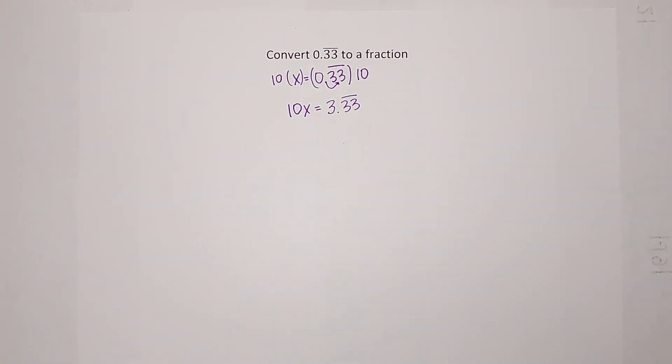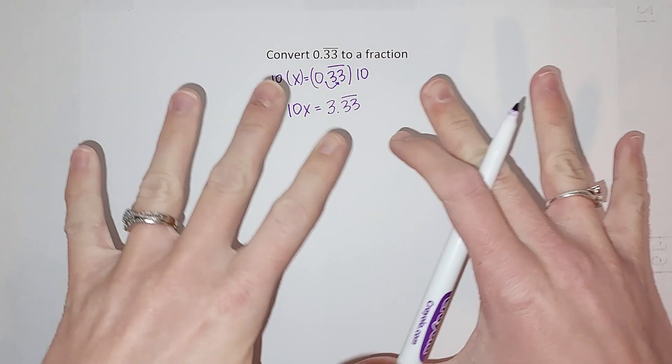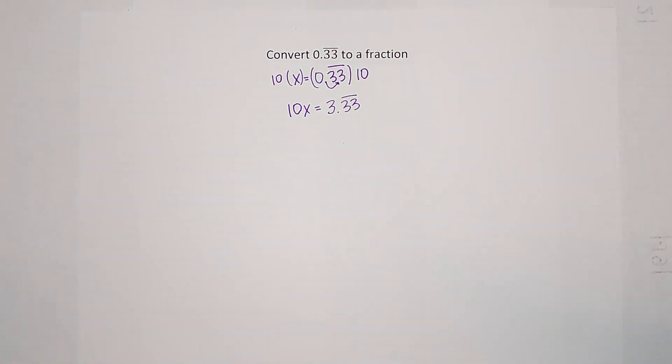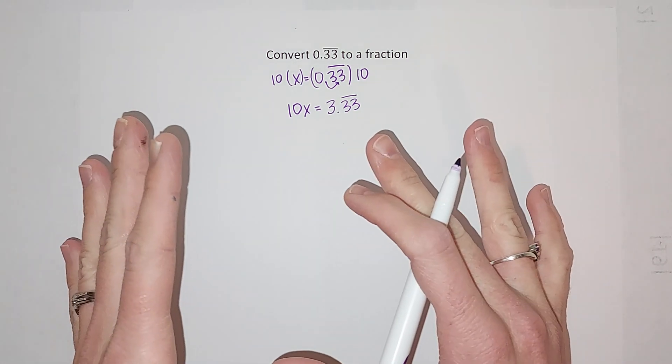You might be like, why? Why did she just do that? Why can we do that? Okay, it is legal in math land to multiply both things by the same number on both sides, and this is going to help us get to our answer. So everything we've done is legal and it's going to help us get to our answer.